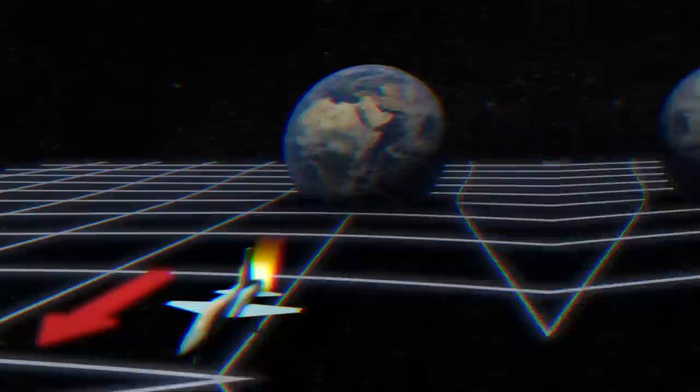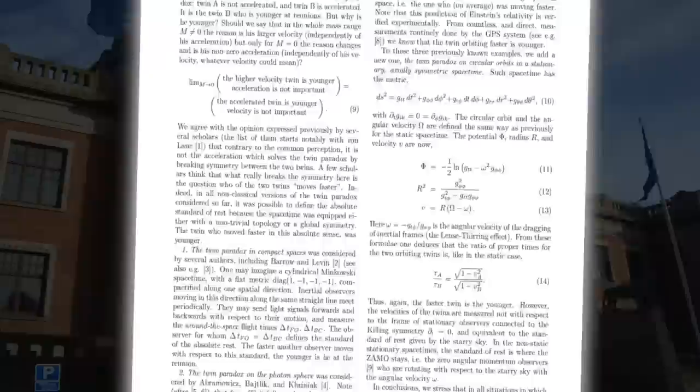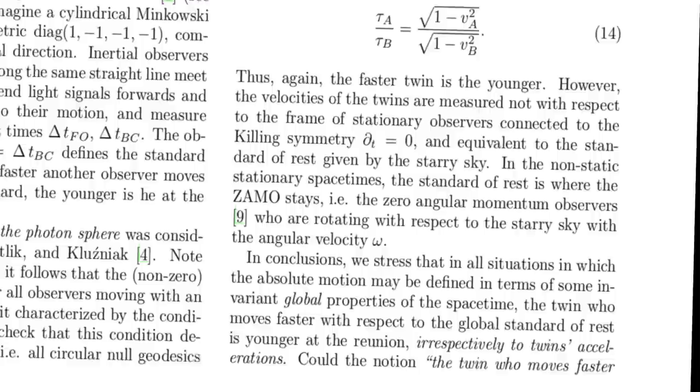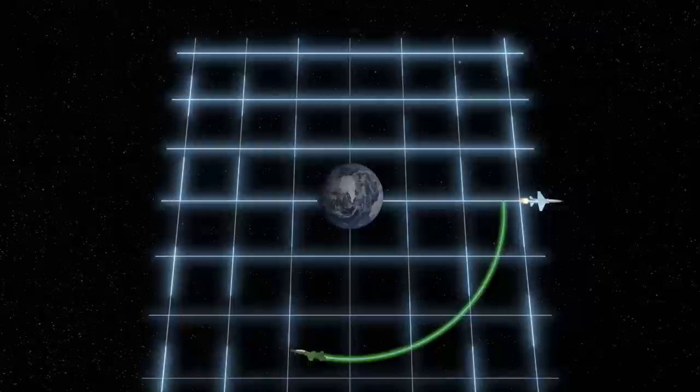But if the conventional solution is wrong, just what then is the solution? This was the immediate problem that cropped up for the authors of the 2009 paper, and they attempted to resolve it by suggesting that the asymmetry of the twin paradox must instead stem from the differing velocities of the twins with respect to some globally defined standard of rest. That is, they said, the twin who travels fastest with respect to a global standard of rest will always end up younger, meaning velocity ultimately wins out over acceleration.